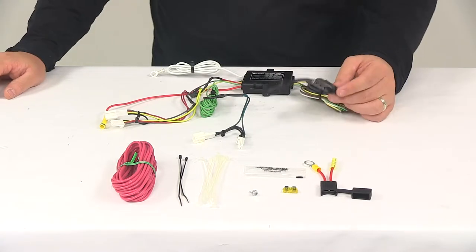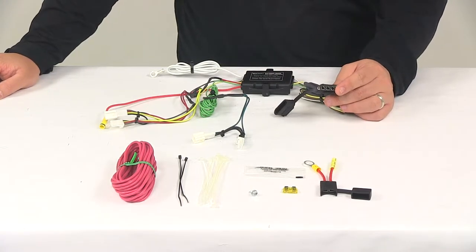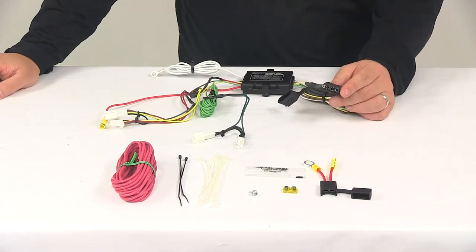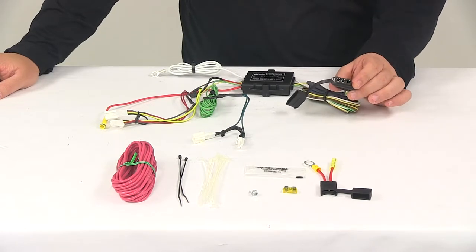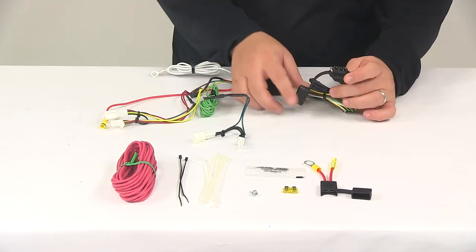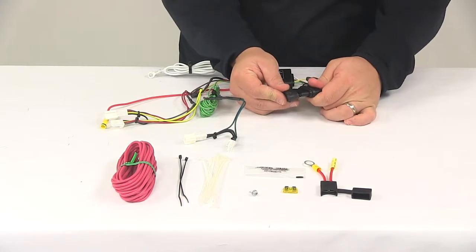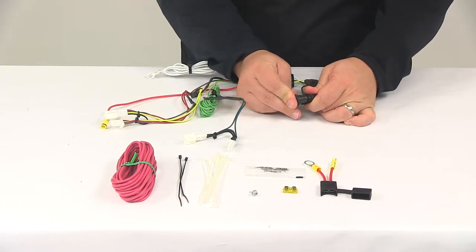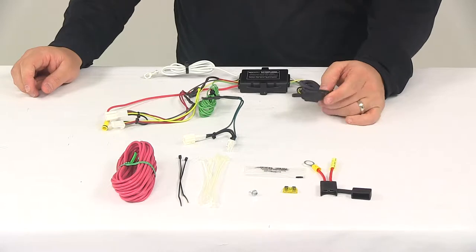It's going to provide a four-way flat connector at the back of your vehicle to power your trailer signal lights. This is compatible with five-pole, six-pole, and seven-pole adapters. Adapters are sold separately, and it's going to come with the dust cap for the four-way flat connector. That way you can cover up the connection points when your plug is not being used.